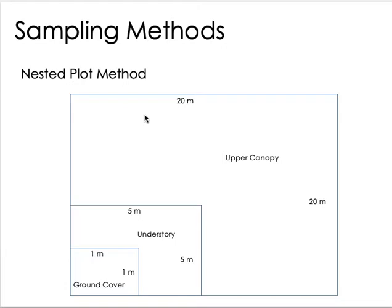The square nested plot structure is also considered a quadrat method, with sub-quadrats inside. Aside from a square, you can also use the circular plot method — instead of a rectangle or square, the sampling unit is a circle, divided into four sections.